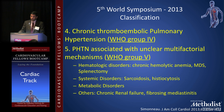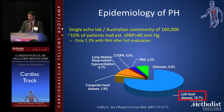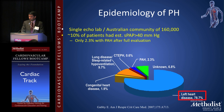Group 3 is due to lung disease, Group 4 is chronic thromboembolic pulmonary hypertension, and Group 5 is due to unclear multifactorial mechanisms, mainly hematologic disorders. As you can see, approximately 75 to 80% of patients with pulmonary hypertension have it due to left heart disease.